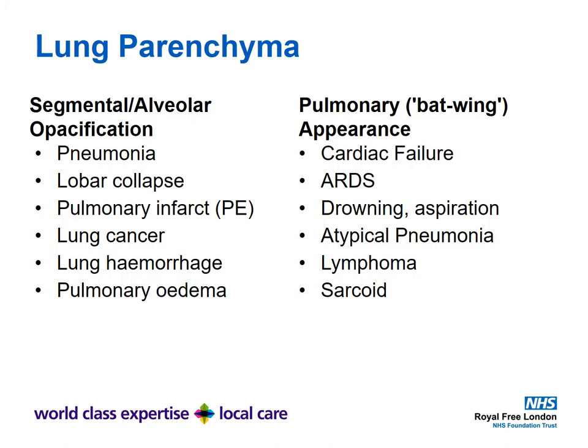When looking at the lung parenchyma you can look at it in a segmental approach or a batwing or pulmonary appearance. Segmental or alveolar opacification is classically caused by pneumonia, lobar collapse, pulmonary infarct from PE — analogous to myocardial ischemia — lung cancer, lung hemorrhage, and pulmonary edema. Batwing appearances are often bilateral and caused by cardiac failure, ARDS, drowning, aspiration, atypical pneumonia, lymphoma, and sarcoidosis.